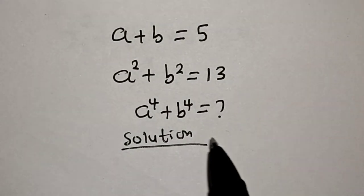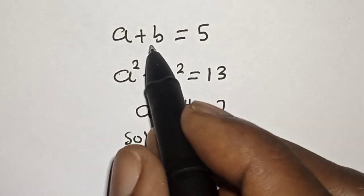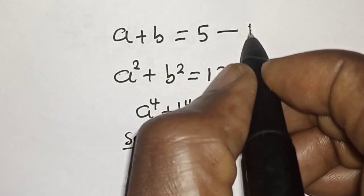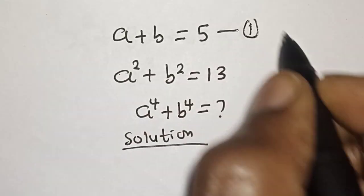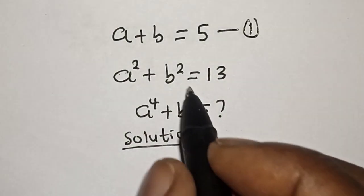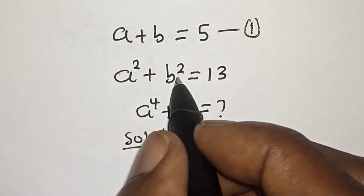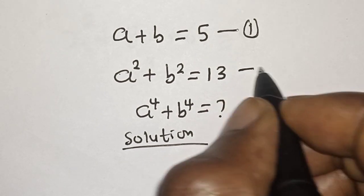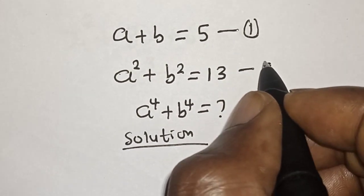We have a plus b is equal to 5 — let's call this equation 1. Then a squared plus b squared is equal to 13 — let's call this equation 2.